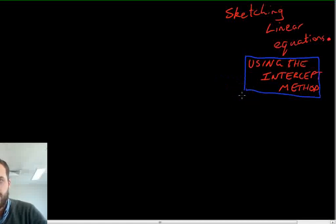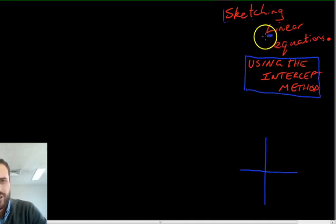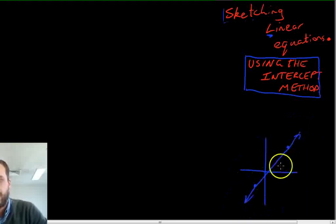First of all I need you to understand what I mean by the word sketching. When we sketch a linear equation it's a very basic drawing. Now the basic idea behind it is if this is your Cartesian plane and you want to sketch a linear equation, remember a linear equation is a straight line, you only really need two points. As long as you have two points, you can draw a straight line through those points. And there's our basic linear equation.